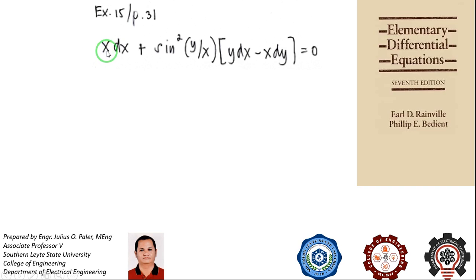If you have your x dx which is first degree and you have sin squared y over x times y dx which is also first degree because sin squared of y over x has zero degree and minus sin squared of y over x times x dy is also first degree. So this is a differential equation homogeneous to the first degree.